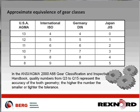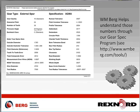WM Berg helps customers understand those numbers through our gear spec program, available at www.wmberg.com/tools. You input your gear quality number, number of teeth, diametral pitch, pressure angle, and backlash class — which we'll cover later — and the program provides all working data to determine whether the gear will work and help you find your best gear solution.